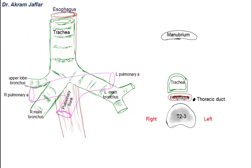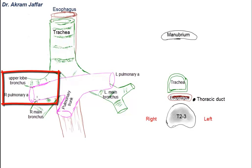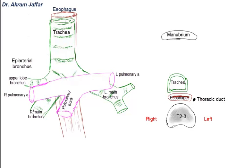Here is the origin of the pulmonary trunk. Note that the right upper lobe bronchus is located above the right pulmonary artery, which is why it is also called the epiarterial bronchus, and it arises from the right main bronchus before reaching the hilum of the lung. The bifurcation of the pulmonary trunk cannot be drawn in this transverse section because it is located at the level of the tracheal bifurcation — at the lower border of T4 — which is much lower than our section at the lower border of T2 or upper border of T3.